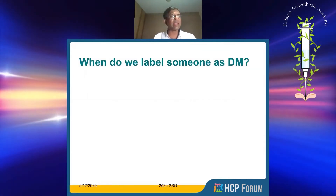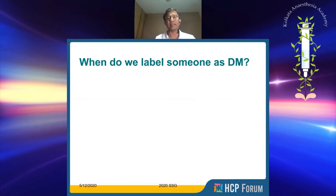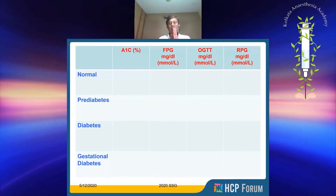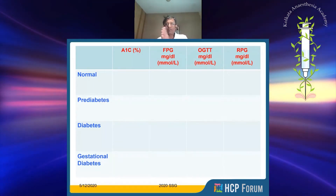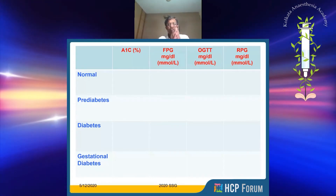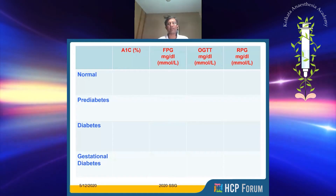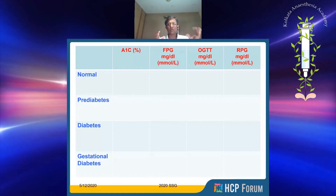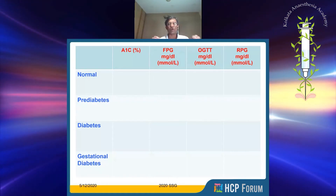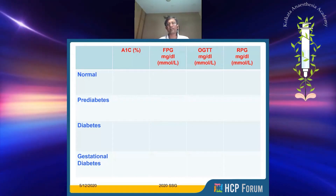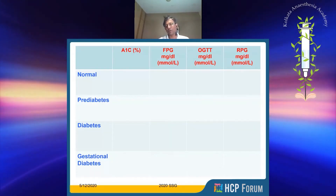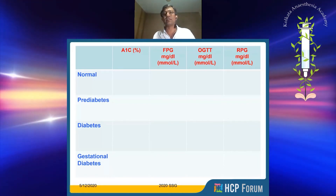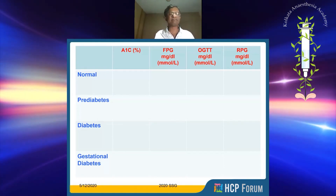So when do we label someone as having diabetes? Dilip, I've given you essentially three — possibly four — columns: a normal person, a pre-diabetic, a diabetic, and someone with gestational diabetes. When do you say someone is normal? At what glycosylated hemoglobin levels, fasting sugar levels, and oral glucose tolerance or postprandial levels would you call someone normal?